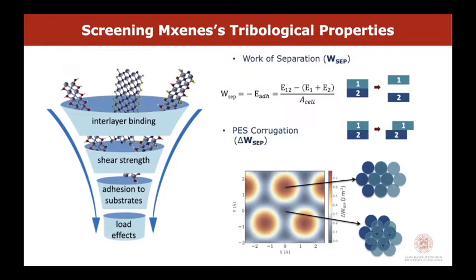By calculating the adhesion energy as a function of the relative lateral position of the two layers, we construct the potential energy surface. This describes how adhesion energy changes during lateral displacement of the layers. The potential corrugation — the difference between the minima and maxima of the potential energy surface — represents the maximum energy barrier that must be overcome when moving one layer along the other, very much related to the ideal shear strength.